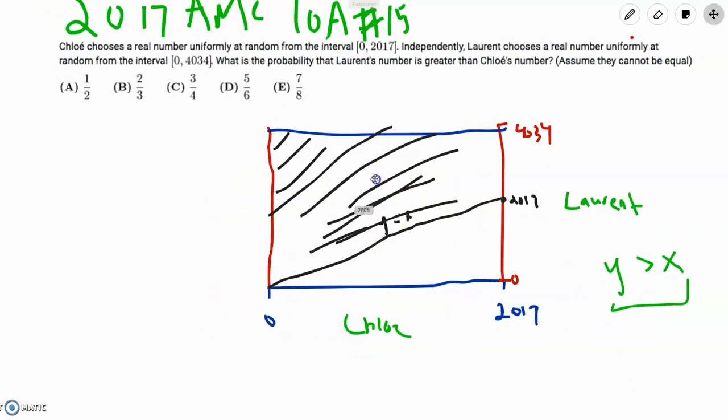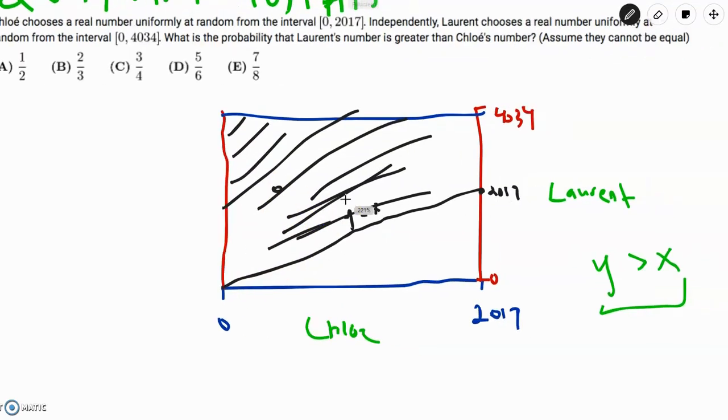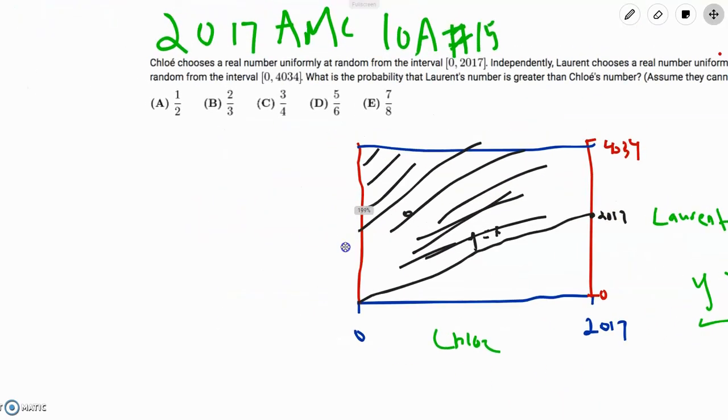So essentially, if we pick any point in this region, we already know that we get the x by just finding the x coordinate, and we get the y by finding the y coordinate, and any point in this region will now satisfy the condition that y is greater than x. So all we have to do is find the area of the shaded region over the area of the total region.